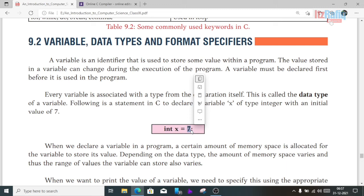When we declare a variable in a program, a certain amount of memory space is allocated for the variable to store its value. Depending on the data type, the amount of memory space varies, and thus the range of values the variable can store also varies. Different data types like integer, character, string, double require different memory storage. For different kinds of data types, we may need different memory storages.